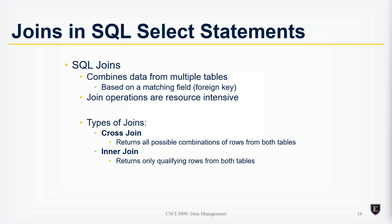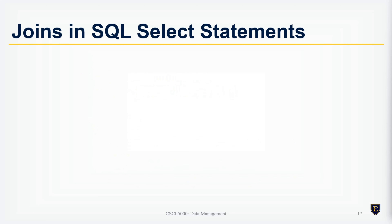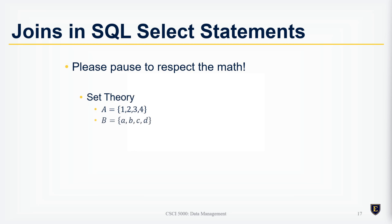An inner join provides a condition where only qualifying rows from both tables are returned. The outer join, which we'll cover in a later video, returns qualifying rows from one table and all rows from the other table, padding non-matching results with nulls.